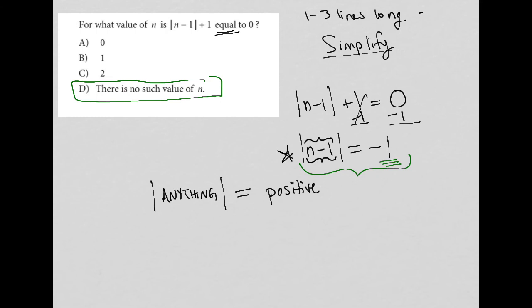Now, you could also treat this question like a plug-in answer question, or PIA. Now, what that means is we know that we have this equation, |n-1| + 1 = 0. And we know that all of these, at least these three, represent n values. So I can just test them out.